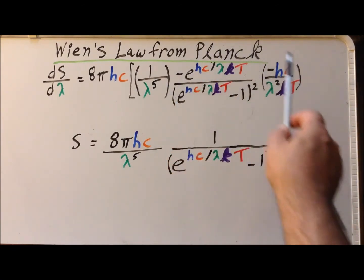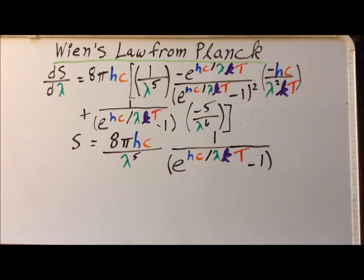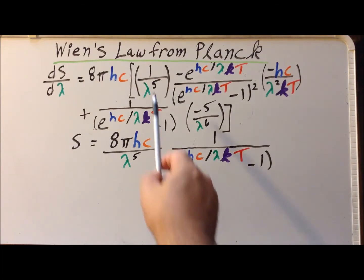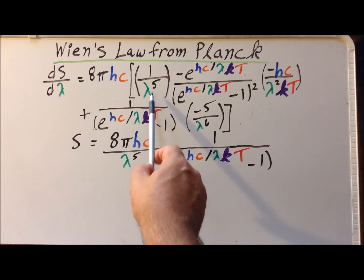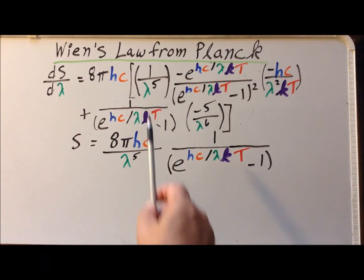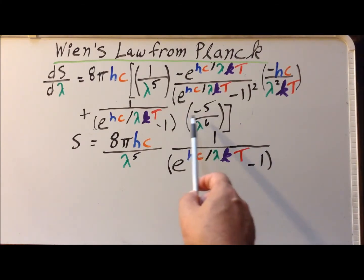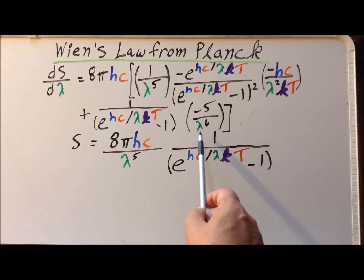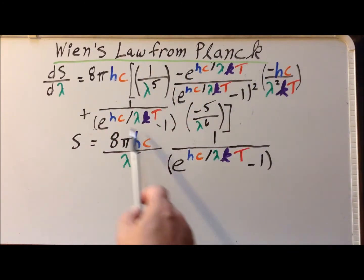Continuing the product rule, we now have plus the second function times the derivative of the first. The second is one over e to the Hc. The derivative of the first — since one over lambda to the fifth is lambda to the minus five — is minus five times lambda to the minus six power, or minus five divided by lambda to the sixth. This whole expression is the derivative of S with respect to lambda.